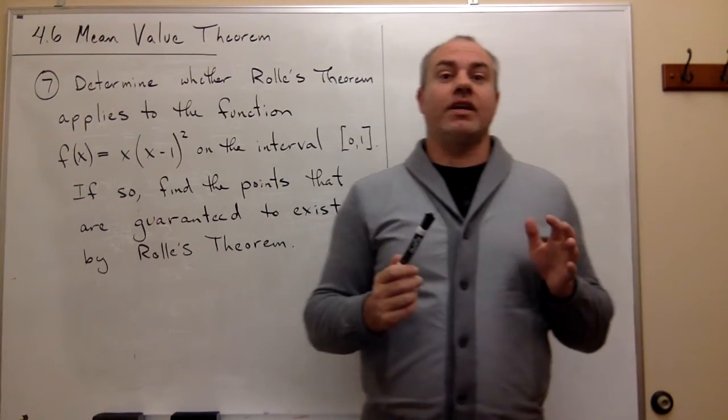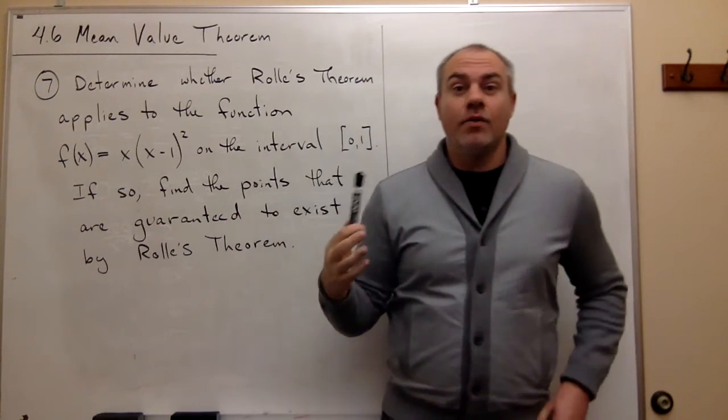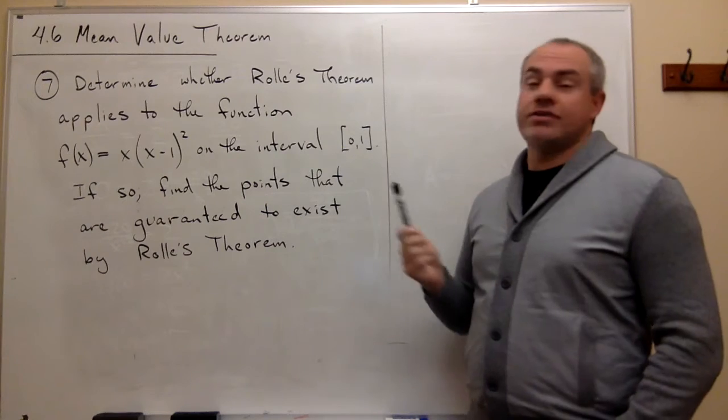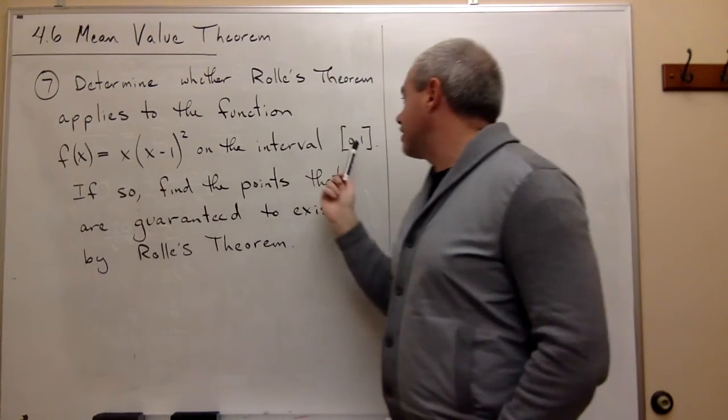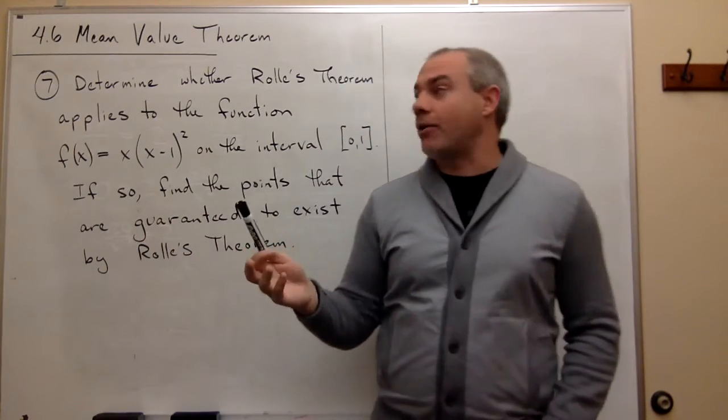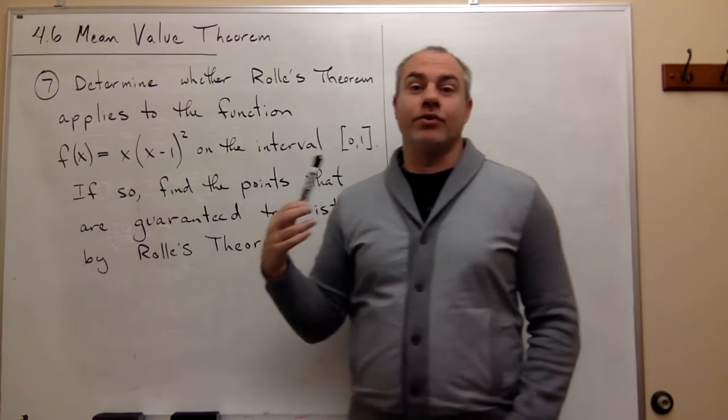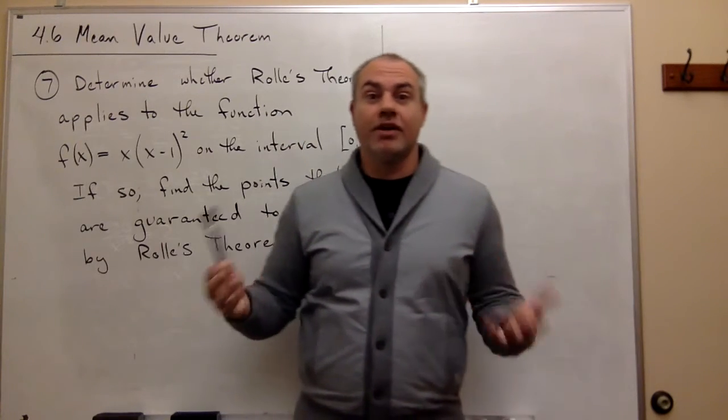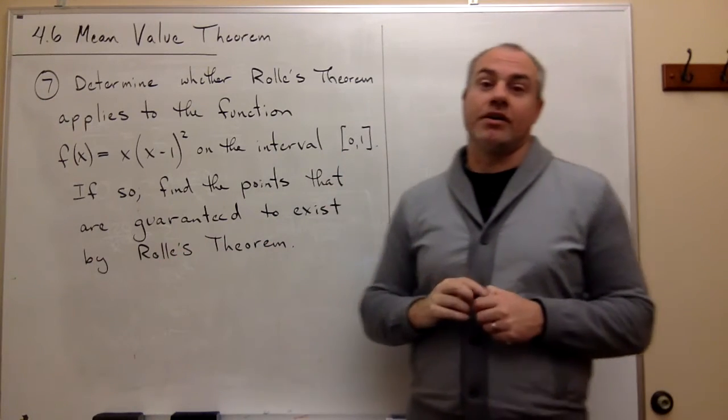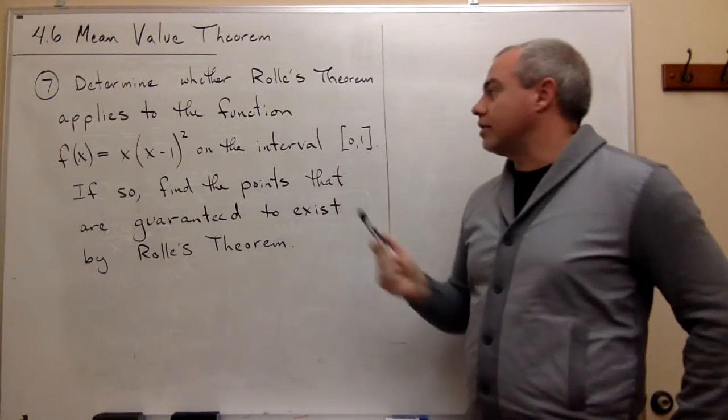So the first thing that we need to answer is, does Rolle's theorem even apply to this function? Well, a few things have to be true. First of all, it needs to be continuous on this closed interval. Well, is this function continuous on this closed interval? This is a polynomial function. I could multiply it out, and it's a nice polynomial, and polynomial functions are continuous everywhere. So if you were doing this problem for homework or something, you might write down that this is a polynomial, so obviously it's continuous on this closed interval.